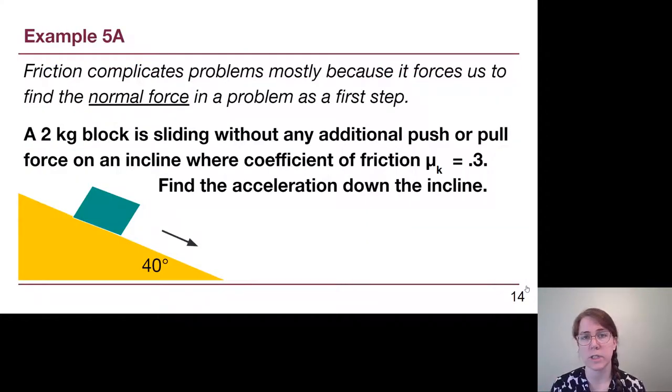So in this very first example that will get its own video, this reminds us that if we look at the bold text here, a 2 kg block is sliding without any additional push or pull force on an incline where coefficient of friction mu_k equals 0.3. Find the acceleration down the incline.